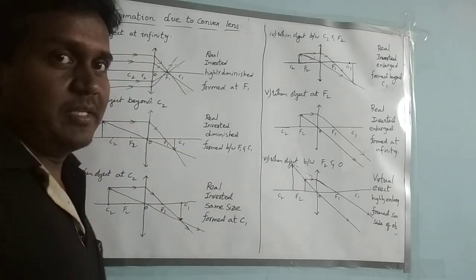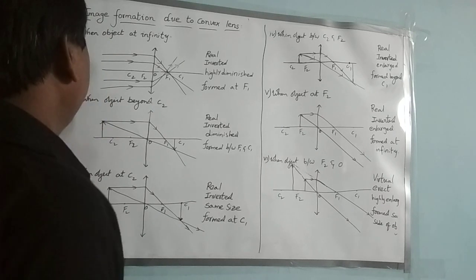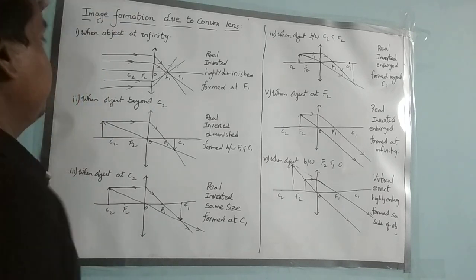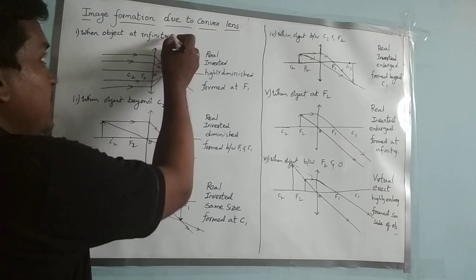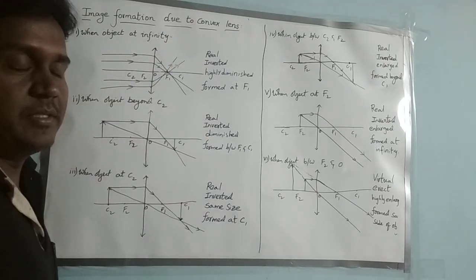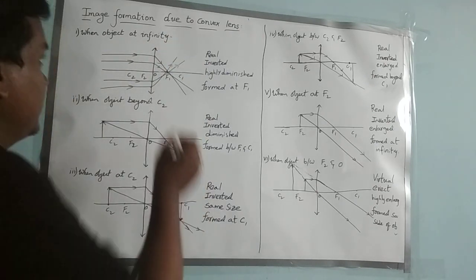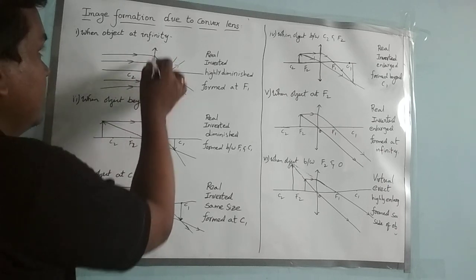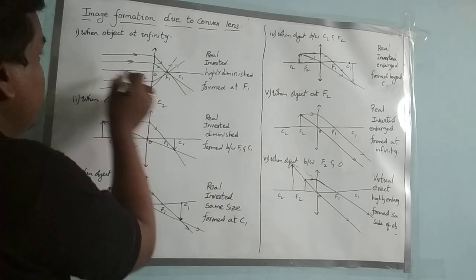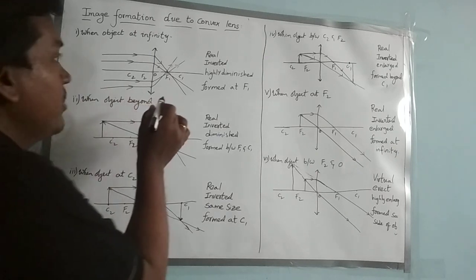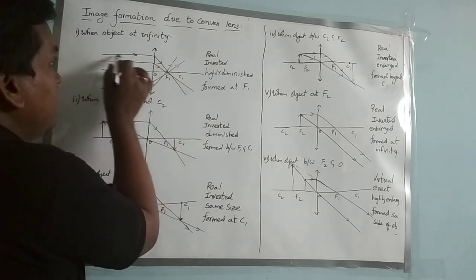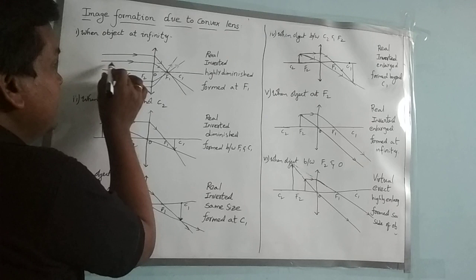Coming to the first case: when the object is at infinity. Object is at infinity means we don't know exactly where the object is — it is very far from the lens. So, with this convex lens, the object is very far away, and we will draw some parallel rays.